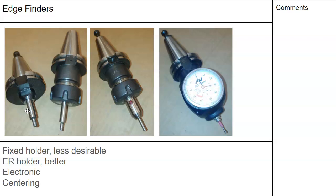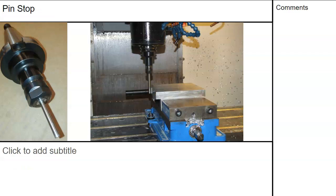For location, we have various edge finders: wigglers and wobblers. The fixed holder is less desirable because of that little bit of clearance and runout; the ER would be better. There's also an electronic edge finder — I usually get about a thou to thou-and-a-half of runout on the tip, but it's very fast for an oversized plate where it's not super critical, and it allows for a Z touch-off. Then there's the probe style — this will also do X, Y, and Z. As the probe moves over and the dial comes around to zero, you are 100 thousandths over the edge of the part.